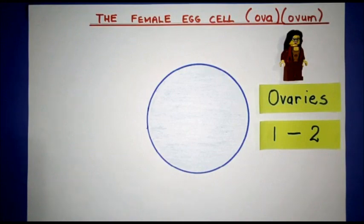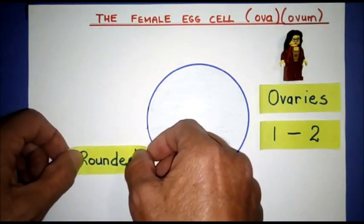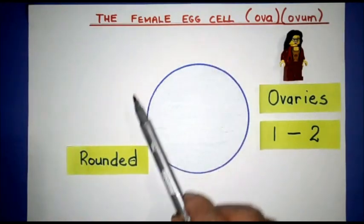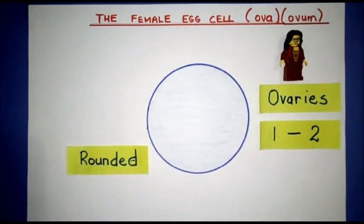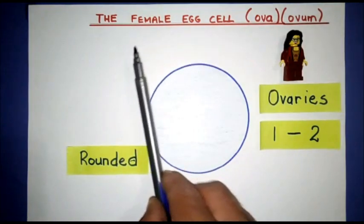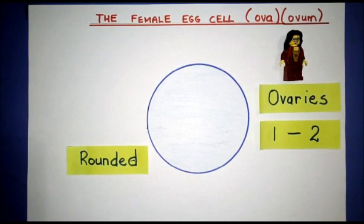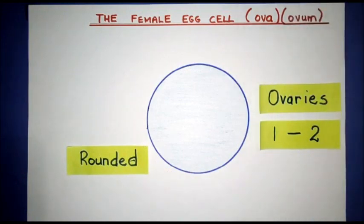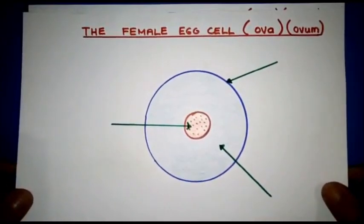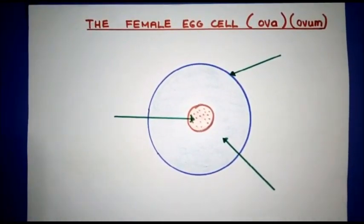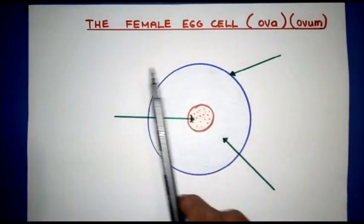Now if you compare this to the structure of the sperm cell, you'll notice that the female egg cell is far more rounded - it's got that round shape to it. In my next slide, I'm going to cut away the female egg and show you what it looks like on the inside. Here we go with my cutting away.